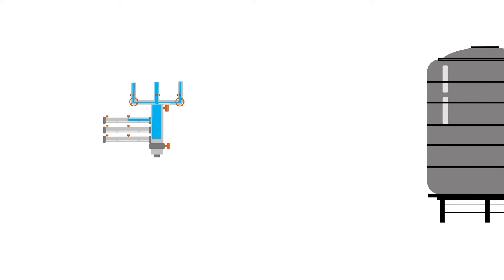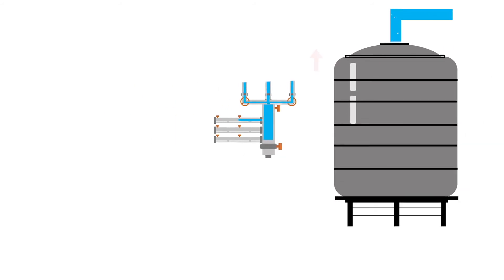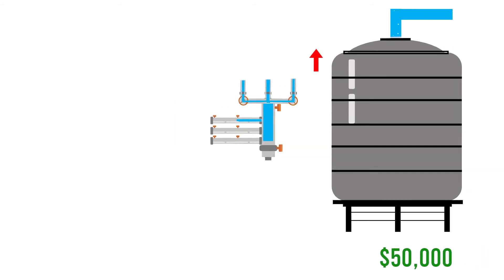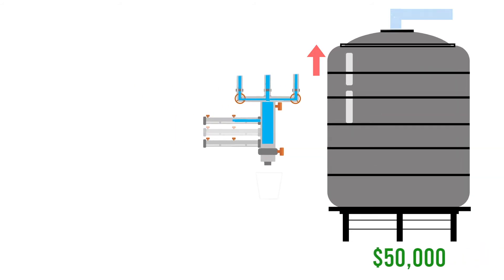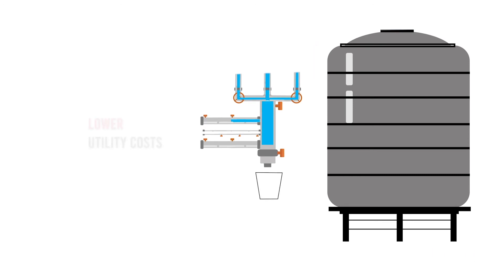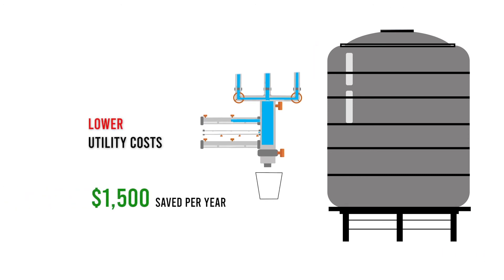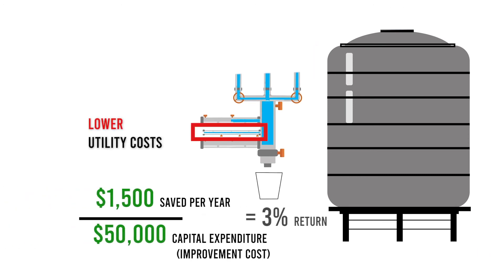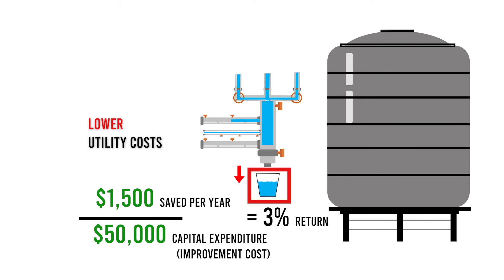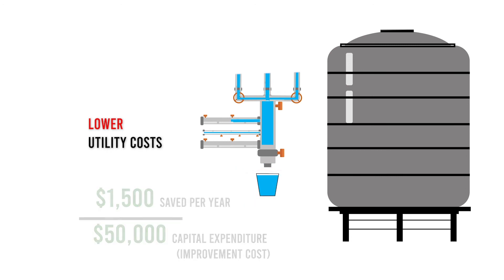Don't invest in anything that returns less than the cap rate. You'll have spent more money than the market is willing to pay for these things, because your improvements won't be valued separately from the rest of your property. For example, maybe you switch the boilers for tankless water heaters and it costs $50,000, but lowers your utility bill by $1,500 a year. That's only a 3% return, which is lower than the 5% cap rate you may have paid. So you just drag down your average returns — no bueno.